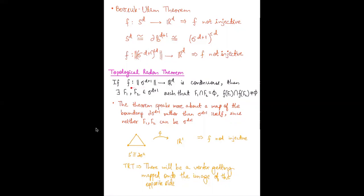So it's not just that some two points will be getting mapped to the same thing — they will — but they will also come from some pair of points coming from disjoint faces. This statement has sigma_{d+1} in it, speaking about sigma_{d+1} rather than a map of its boundary, but it doesn't make a difference because neither F1 nor F2 can be the whole simplex sigma_{d+1} itself, because otherwise these wouldn't be disjoint.